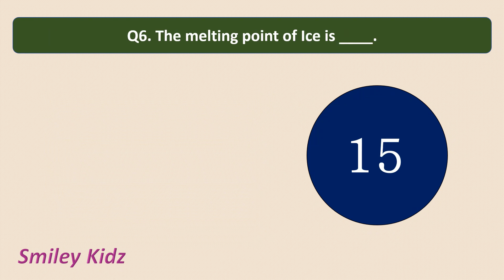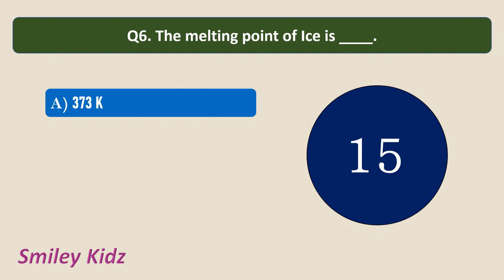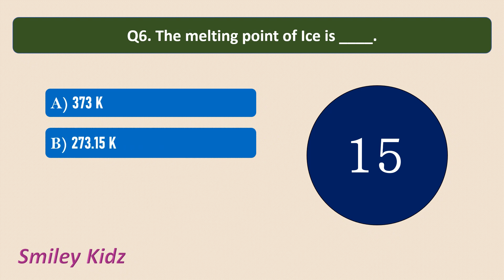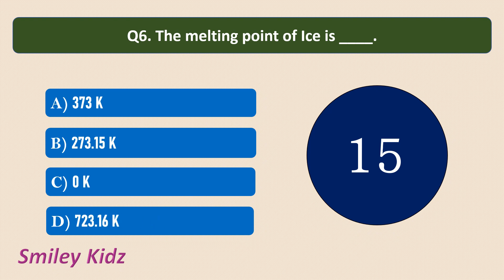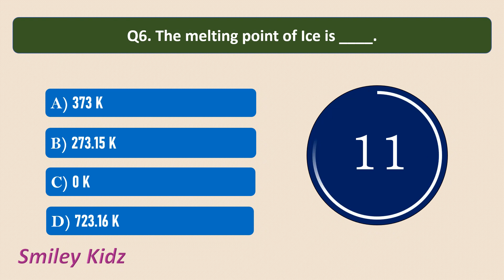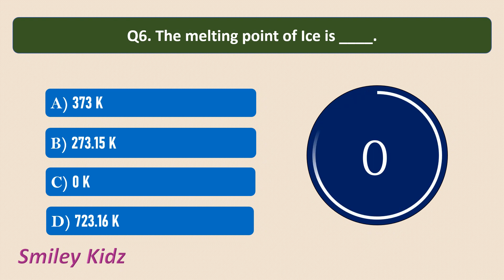Question number 6: The melting point of ice is — options are: 373 Kelvin, 273.15 Kelvin, 0 Kelvin, 723.16 Kelvin. Your time starts now. Your time is up. The correct answer is 273.15 Kelvin. The melting point of ice is 273.15 Kelvin.